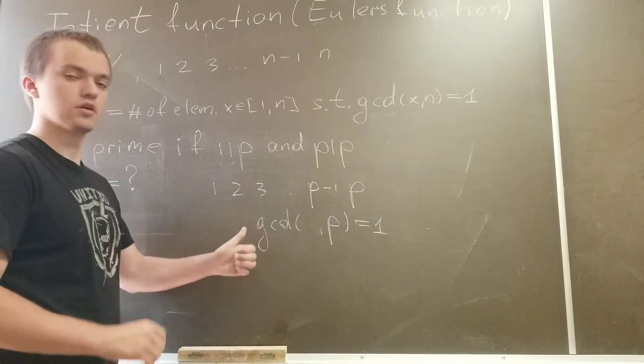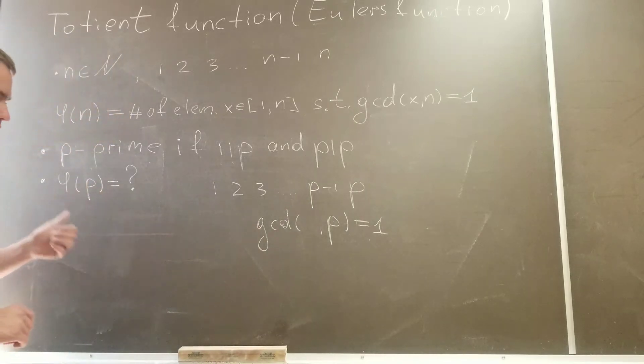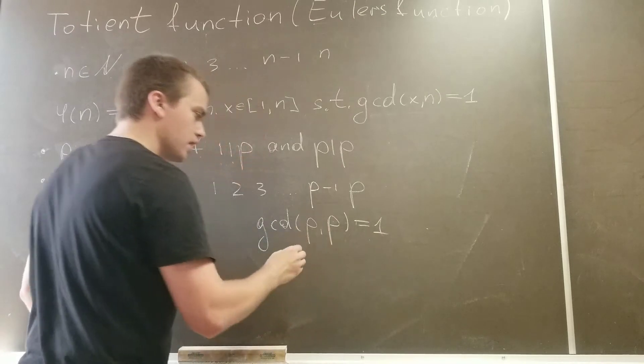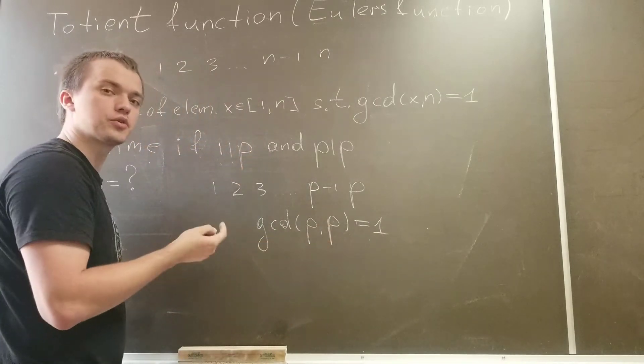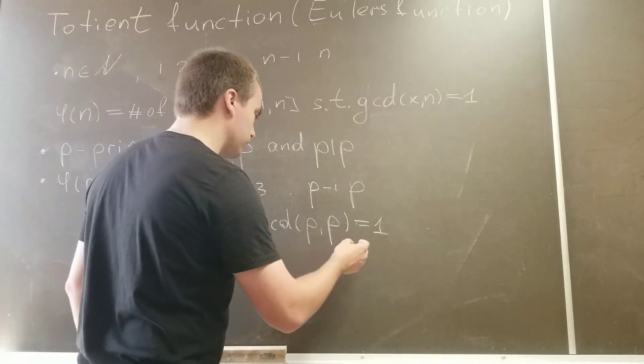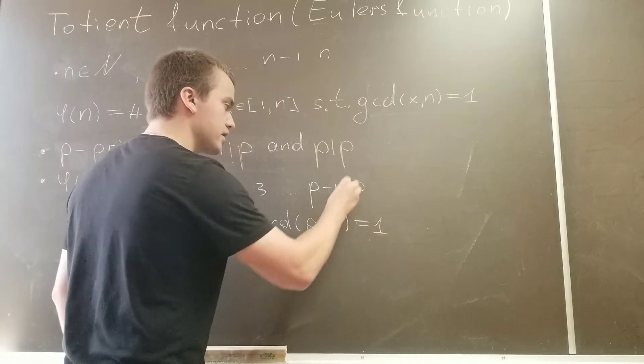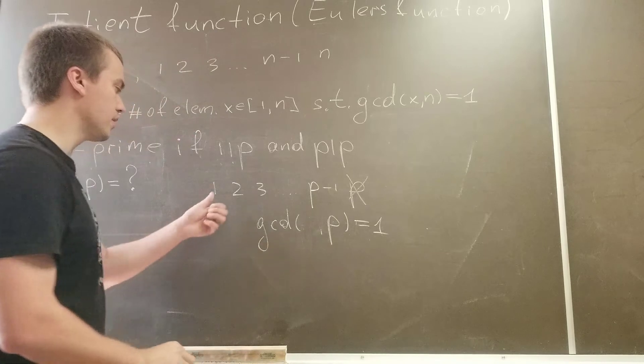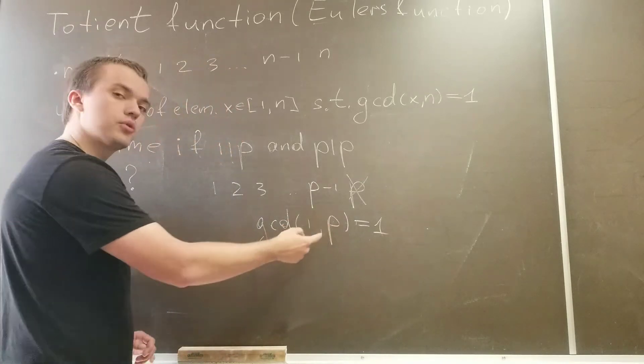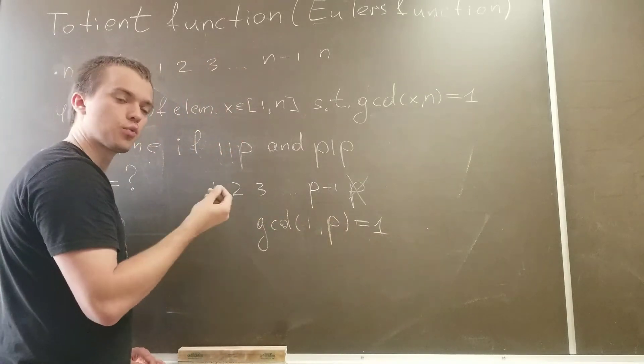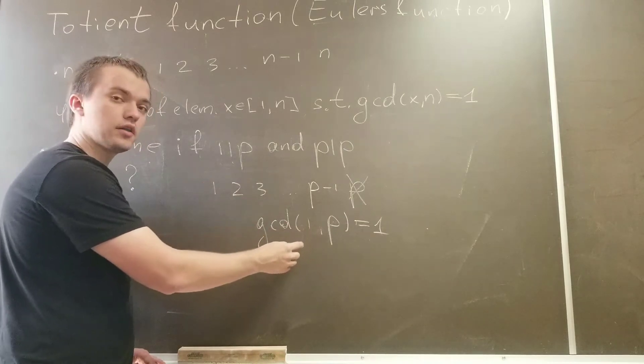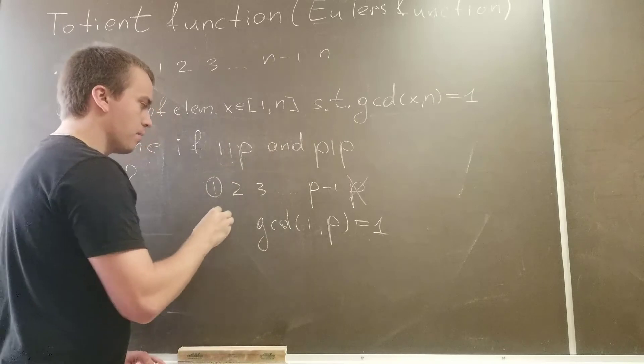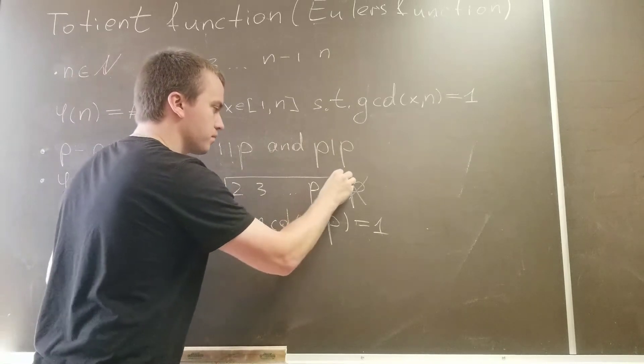For any number, if you're going to calculate the Euler's function, if you're going to plug in the number itself, you can see your gcd is not going to be equal to 1, it's going to be equal to p. So in this case p doesn't work right away. If you're going to plug in number 1, the gcd of 1 and any number is always equal to 1. Why? Because the divisors of 1 have only one divisor, 1 itself, so 1 works.